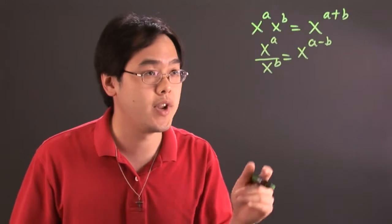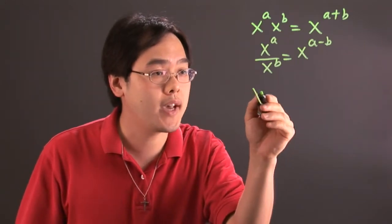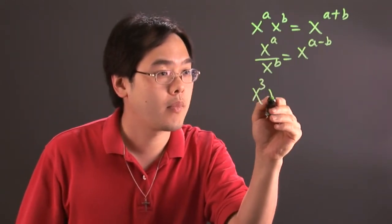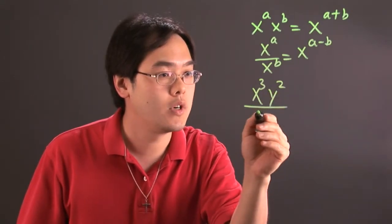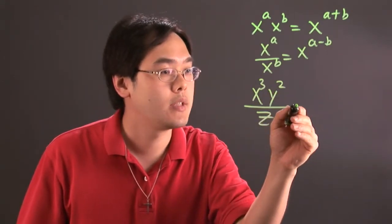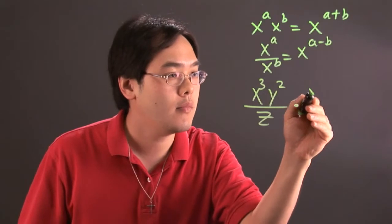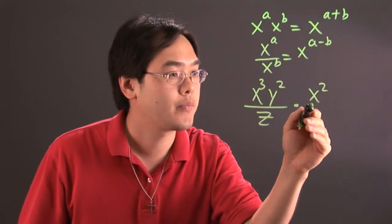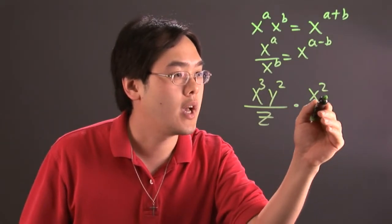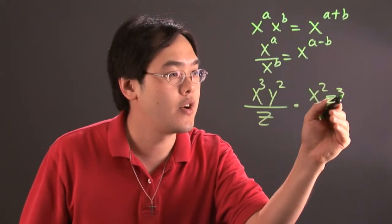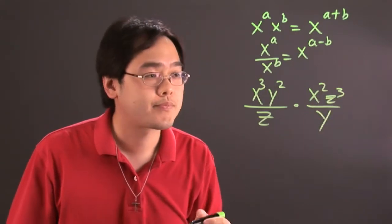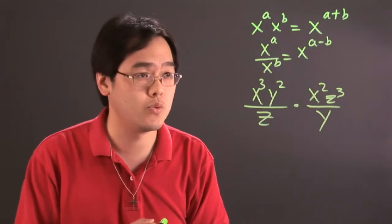So here's an illustration for you. If you have x to the third, y squared over z times x squared times z to the third over y, here's what you can do with these rules.